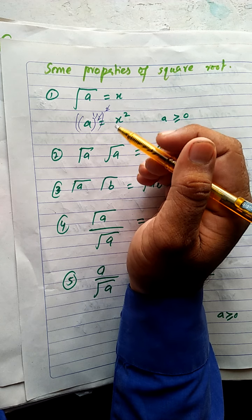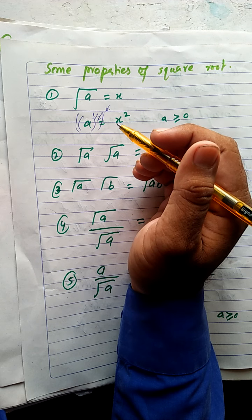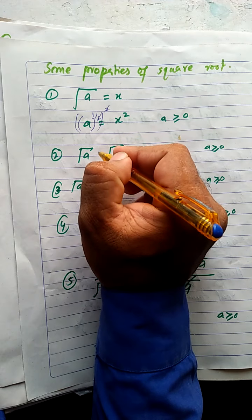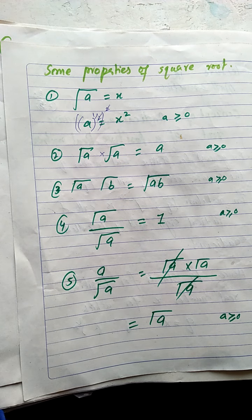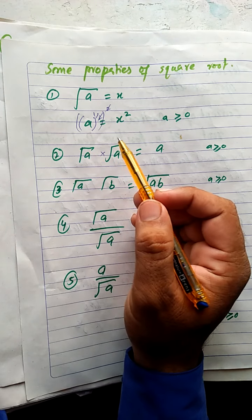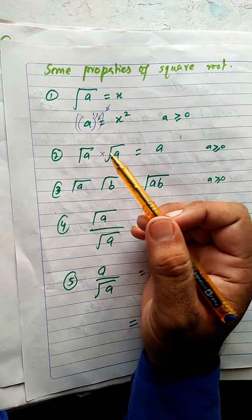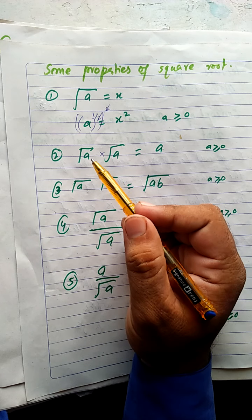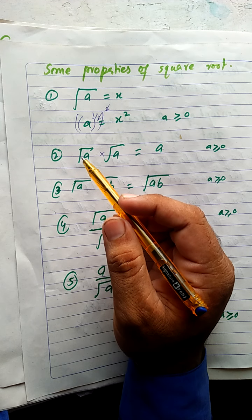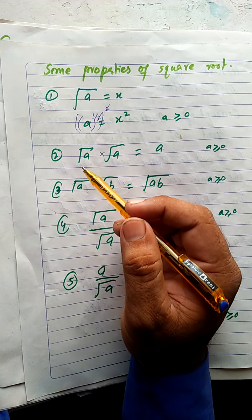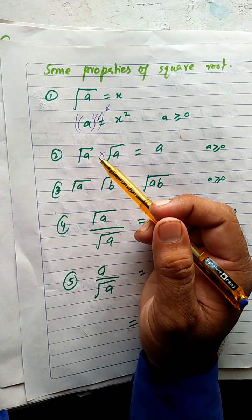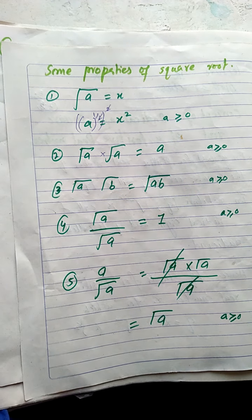The second property: square root of a multiplied by square root of a. When two radicands are the same, their square roots multiply as a^(1/2) × a^(1/2). Since the bases are the same, we add the powers: one upon two plus one upon two equals one, giving us a^1 = a. This is the second property of square root.